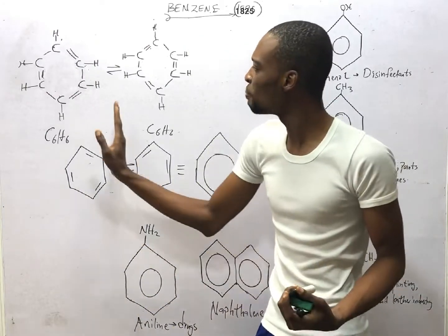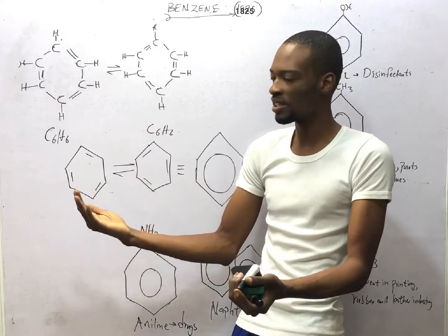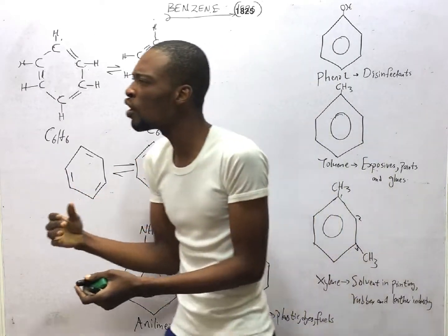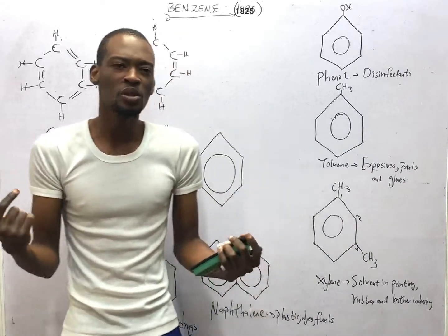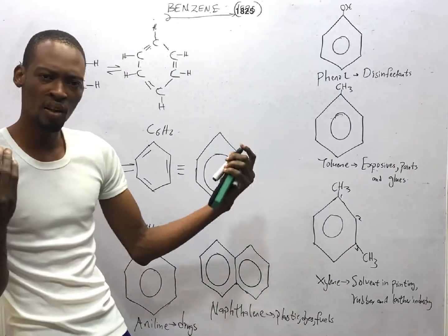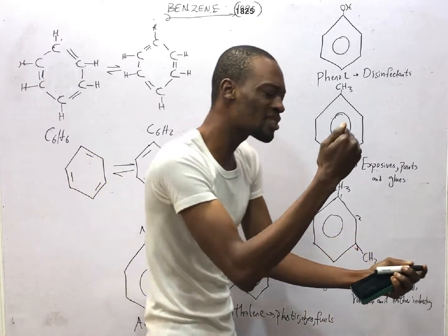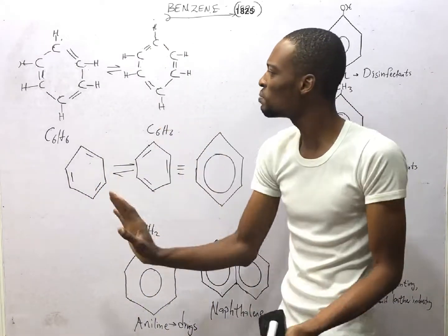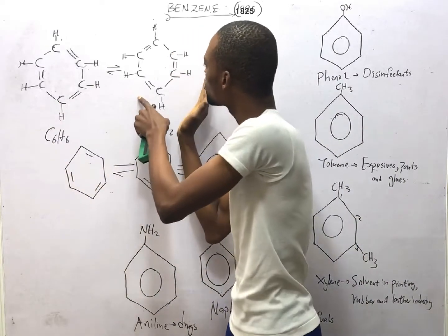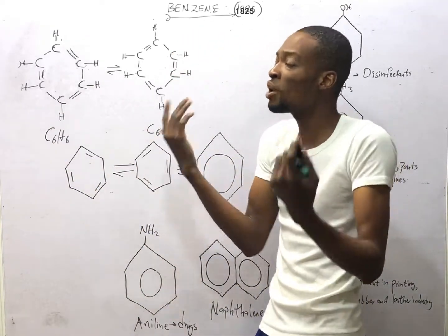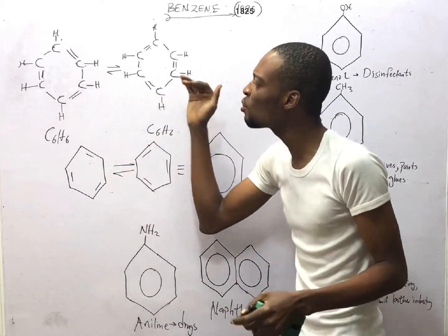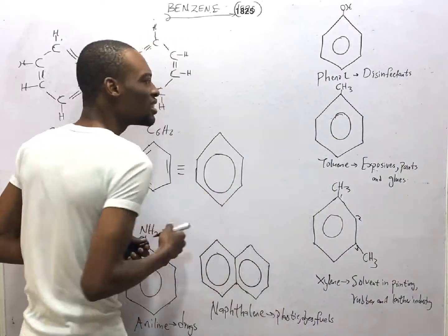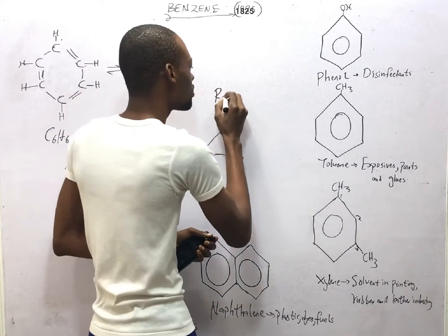The existence of benzene in these two forms is called resonance. Resonance is the existence of two or more structures to represent a particular molecule. The correct or best structure of benzene is benzene in resonance, meaning no single structure is fully enough to represent benzene because the double bond and single bond can be arranged either way. We therefore represent benzene in a form referred to as the resonance hybrid.